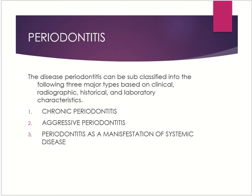Periodontitis can be broadly classified as early or adult, as chronic or aggressive, and as localized or generalized. In early periodontitis it is aggressive — the patient is less than 35 years old and there is a defect in host defenses, often due to pre-pubertal or juvenile onset, presenting as rapidly progressing periodontitis. In adult periodontitis it is slowly progressive, the patient is more often than not over 35, and there is no defect in the host response — the patient is healthy but older.